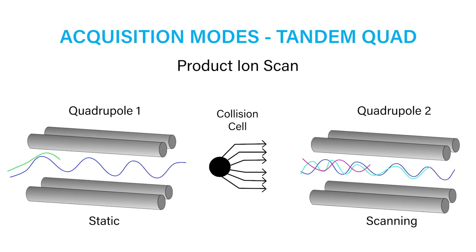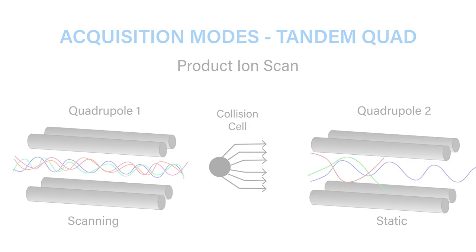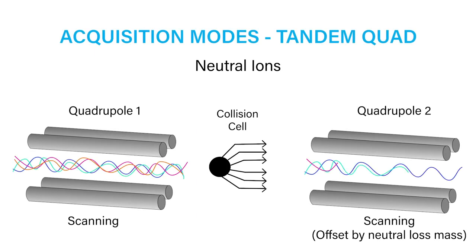The quads in an MS-MS acquisition can be set as scanning or static, allowing us to acquire data in several different modes.